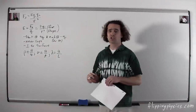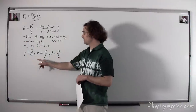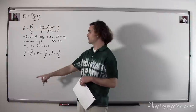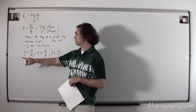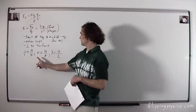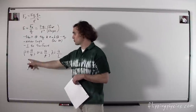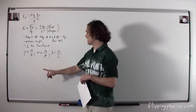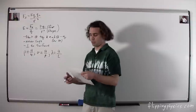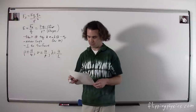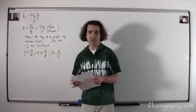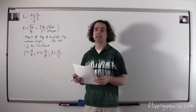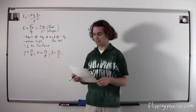Three different charge densities: volumetric charge density, surface charge density, and linear charge density — rho, sigma, and lambda. That's charge per unit volume, charge per unit area, and charge per length. You need to know these charge densities; they're going to come up quite a bit in electricity and magnetism.